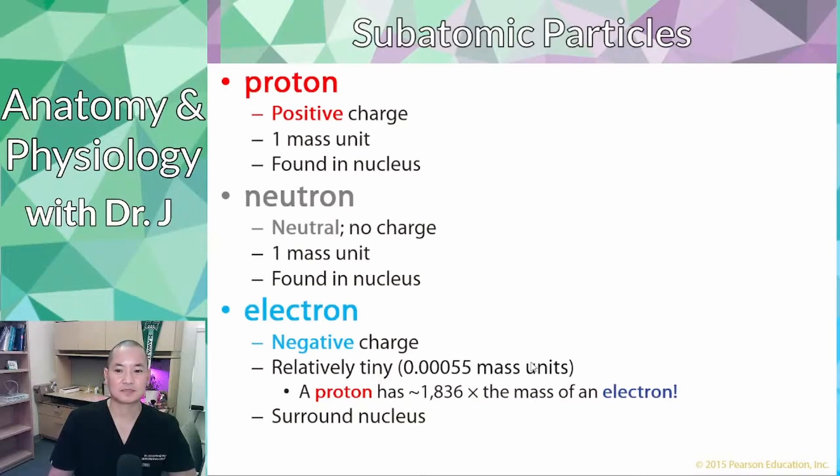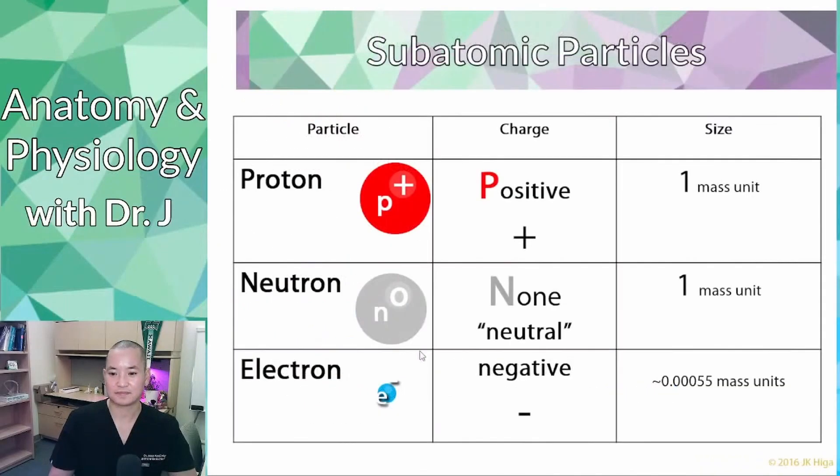So you find protons and neutrons which are relatively big in the nucleus. Protons are positive, neutrons are neutral, and negatively charged electrons are buzzing around the nucleus. So this is a summary of the subatomic particles.